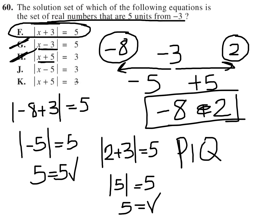All the rest of the answer choices, when you plug in negative eight and two, none of those choices will work for both values. F is the only one that works for both values.